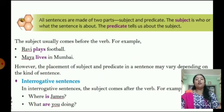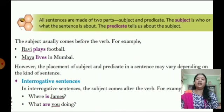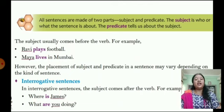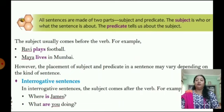Now we are going to study how the subject is placed in the four types of sentences. In assertive sentences, which are statements, the subject usually comes before the verb. For example, 'Ravi plays football' and 'Maya lives in Mumbai.' In both sentences, 'plays' and 'lives' are the verbs, and 'Ravi' and 'Maya' come before them. So in an assertive sentence, the subject comes before the verb.